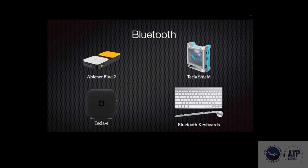You also have Bluetooth options. AbleNet makes a Bluetooth switch which we'll use in the demonstration of setting up switch control on the laptop in just a moment. It has two built-in switches but also a plug-in so you can use external switches. Being Bluetooth means it's wireless, making it easy to set up and reduce wires on a wheelchair.